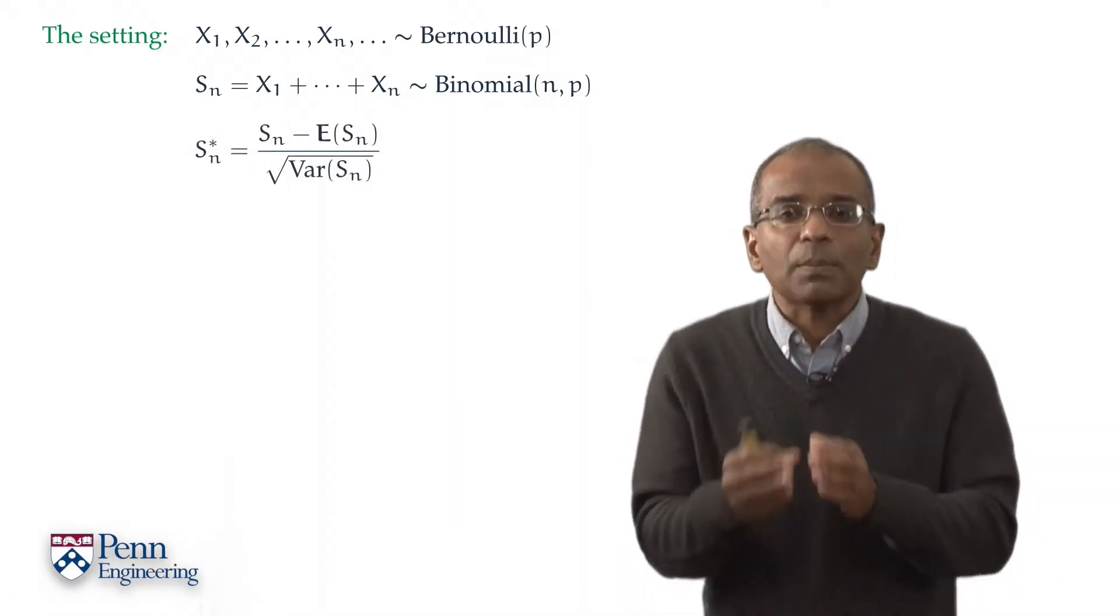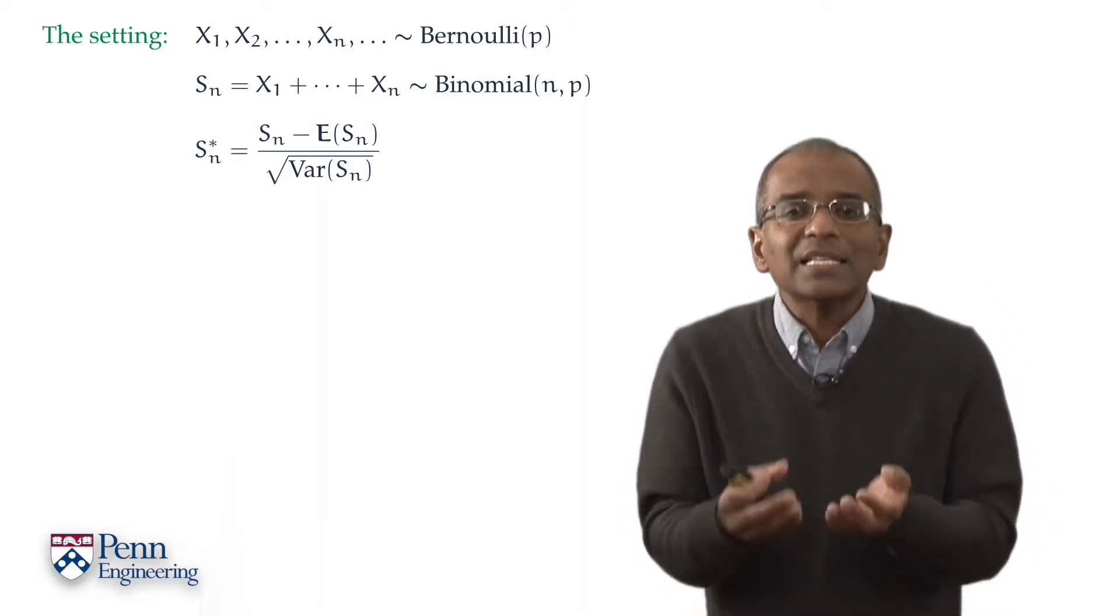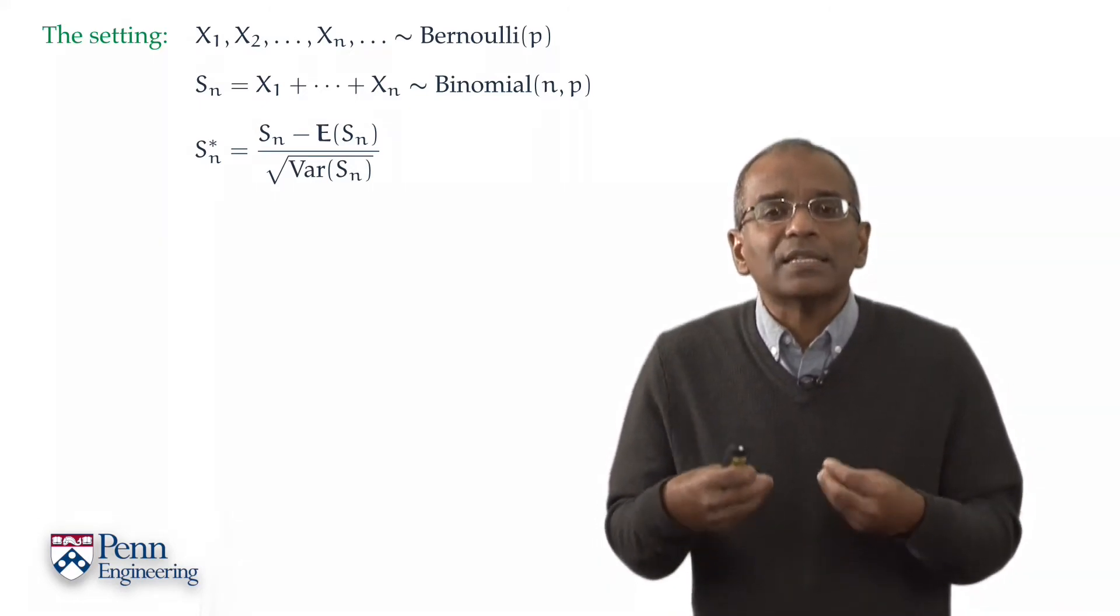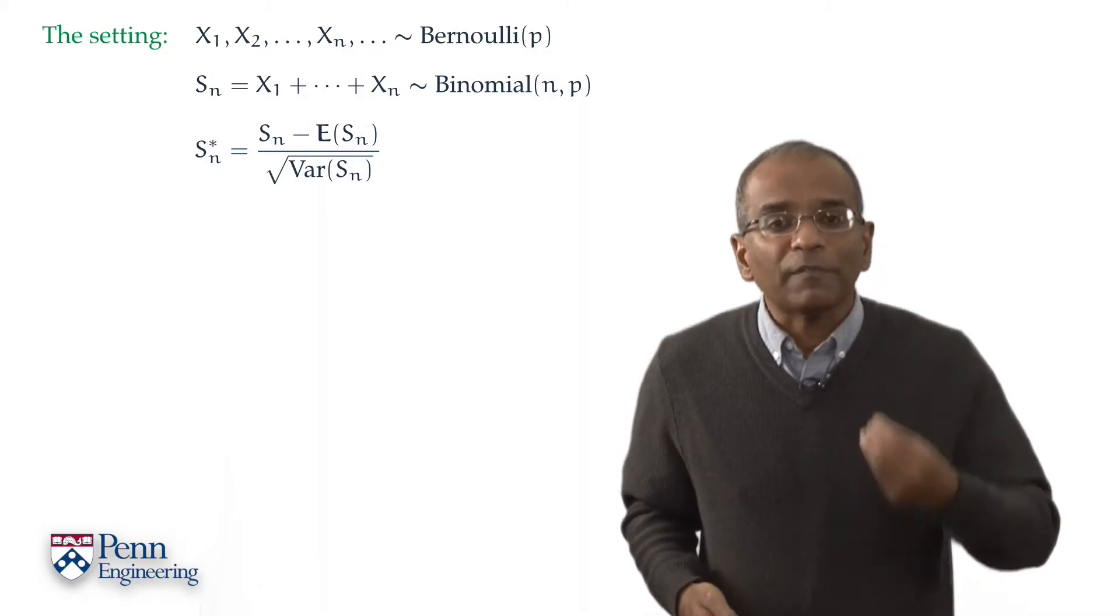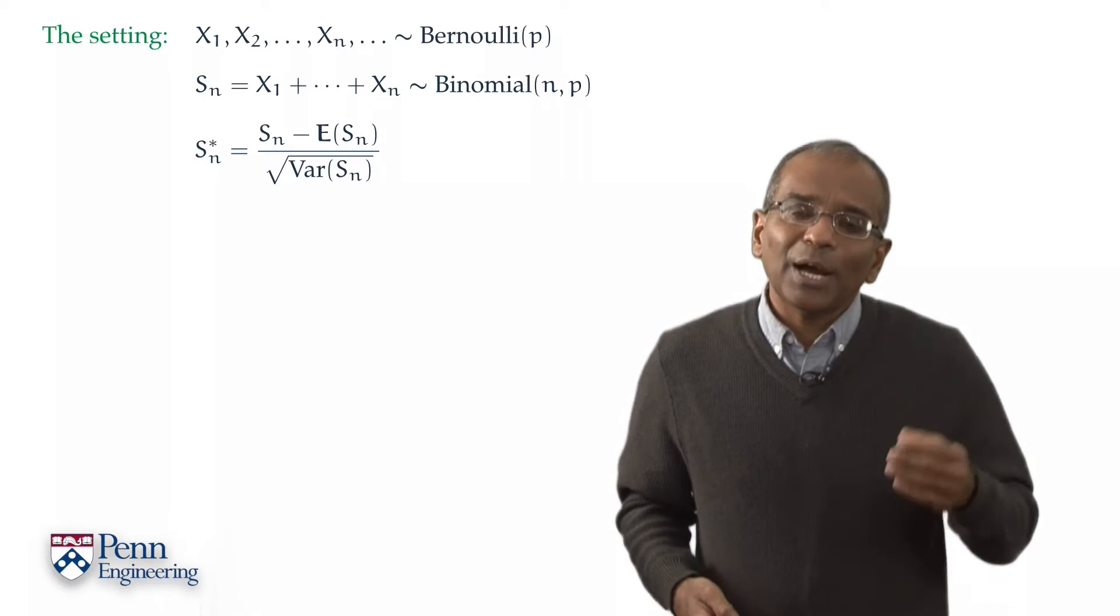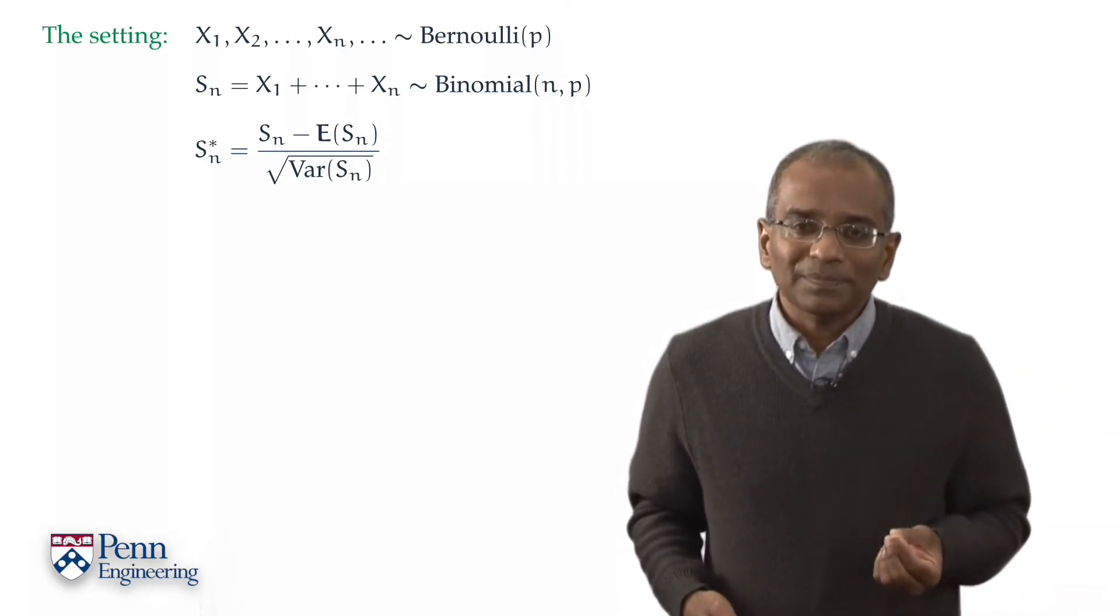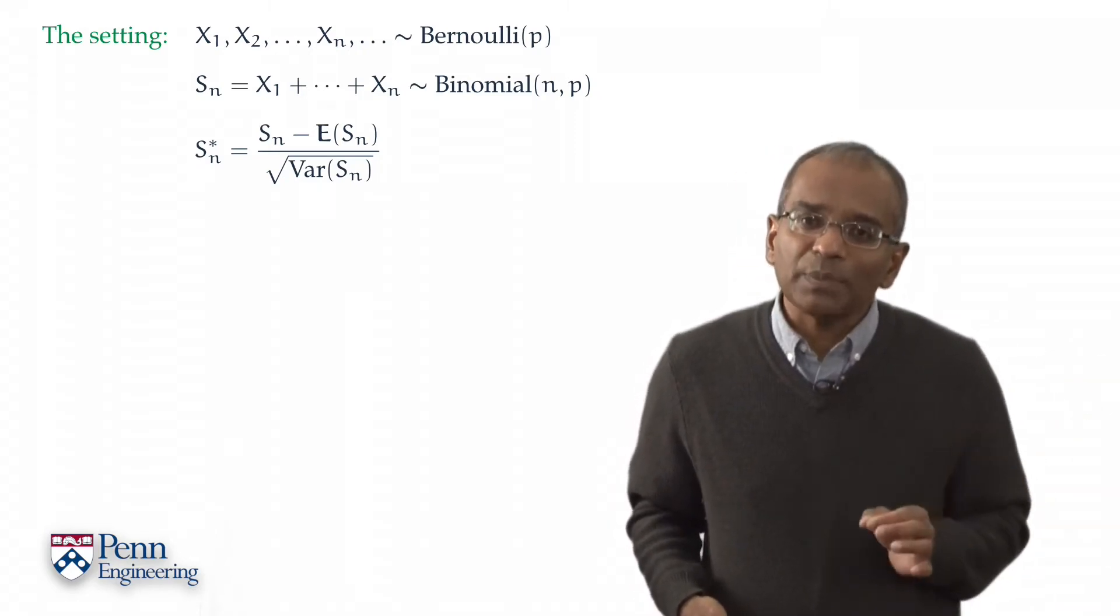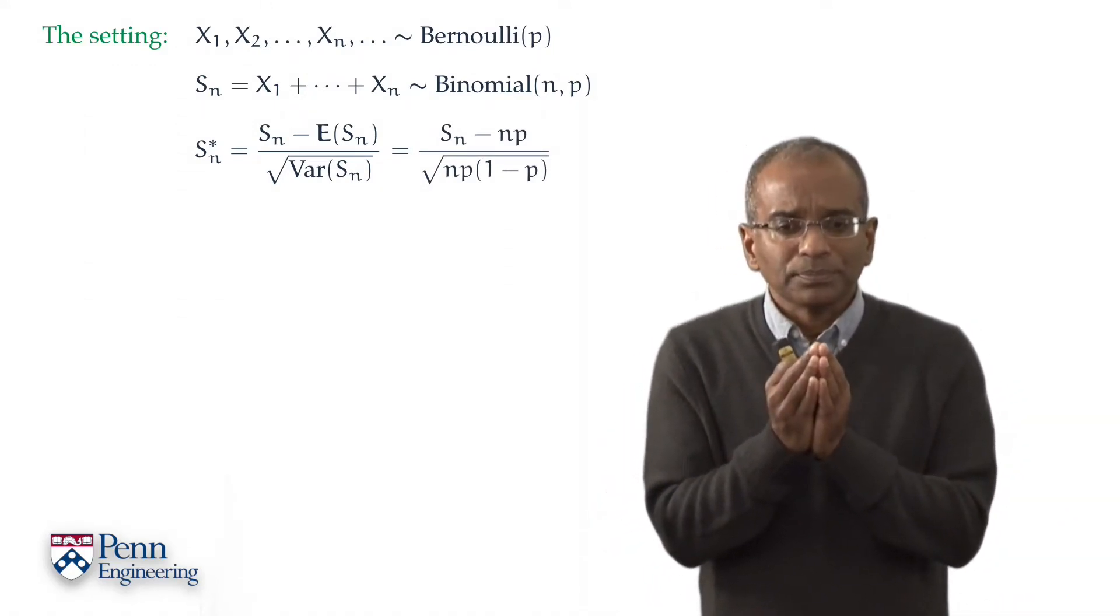Centered at the origin by subtracting from Sn its expected value, and scaled to have a unit spread by dividing this by the standard deviation of Sn, or in other words, the square root of the variance. We recall that the binomial Sn has got expectation n times P, and it has a variance n times P times 1 minus P. And so the expression simplifies into this fraction.